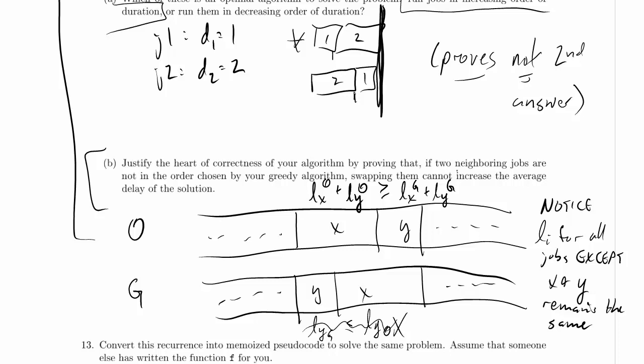And is it greater than or equal to L_Y in O? Well, notice that L_Y in O is equal to L_X in G, right? L_Y in O is equal to L_X in G. We can see that because the set of jobs run up to that point has stayed exactly the same. So their total duration has also stayed exactly the same.